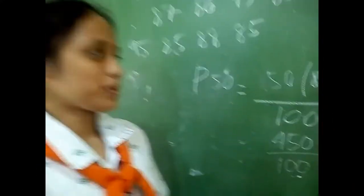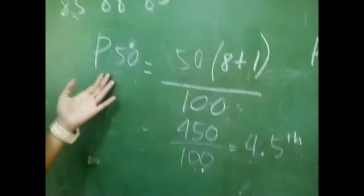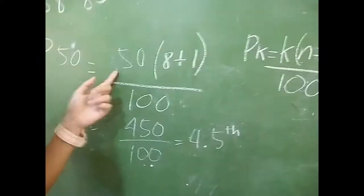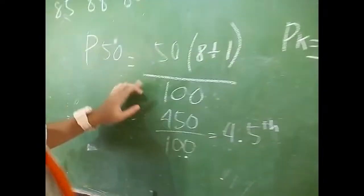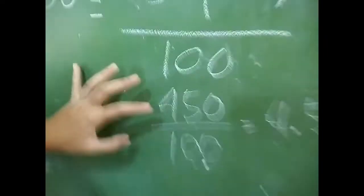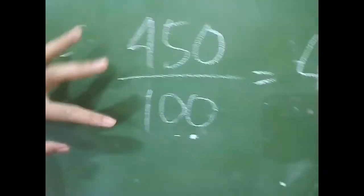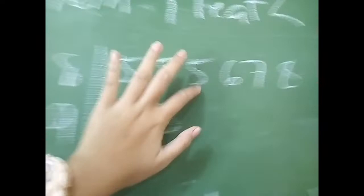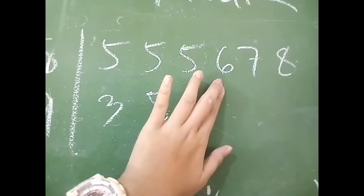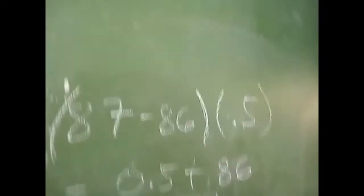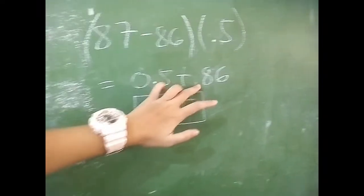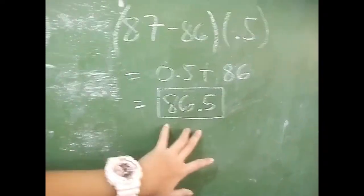Now we have another example. So we have 94 plus 1 divided by 100. The answer will be 450 divided by 100, which equals 4.50. Counting to position 4, we get 86. So it will be 87 minus 86 times 0.5, which equals 0.5 plus 86, equals 86.5.